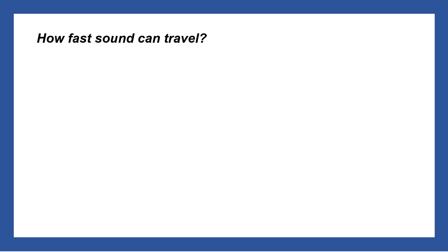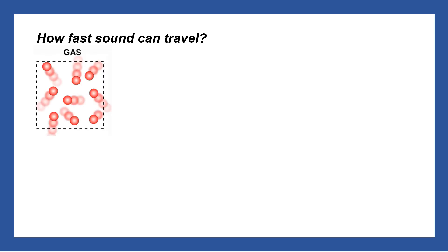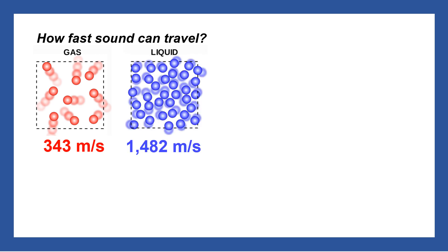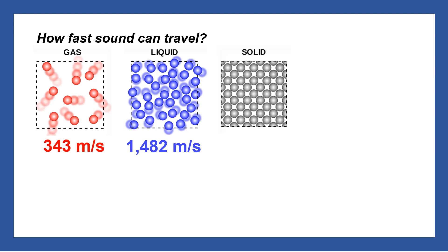How fast can sound travel? In gas, where the particles are far apart, sound in air travels around 343 meters per second. In liquid it is around 1,482 meters per second, and in solid like metal it is around 6,000 meters per second.